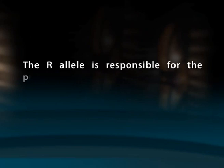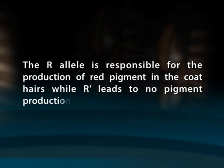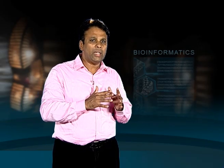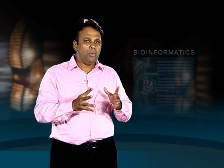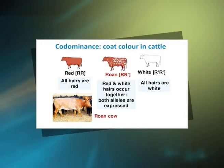The R allele is responsible for the production of red pigment in the coat hairs, while R prime leads to no pigment production. There are alleles for red and white hair in roan cattle. Animals having the genotype RR have red hairs. Animals with R prime R prime genotype appear as white hairs. Animals with the heterozygous genotype R R prime have some red pigmented hairs and some white hairs, and they appear as roan.